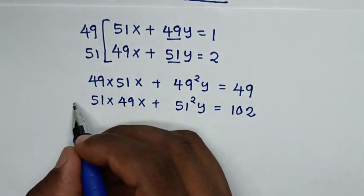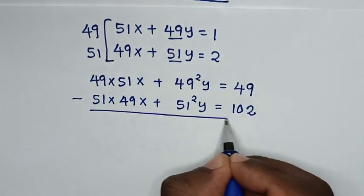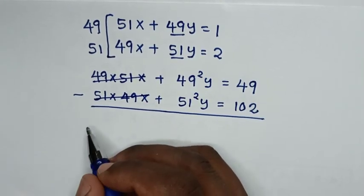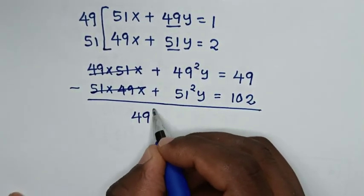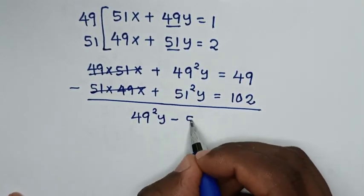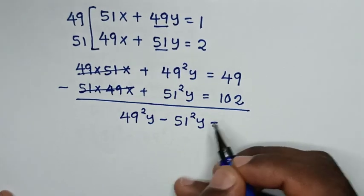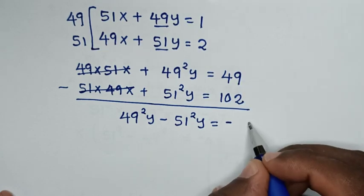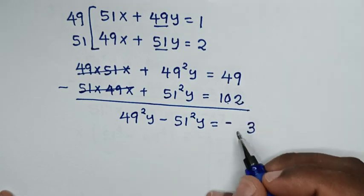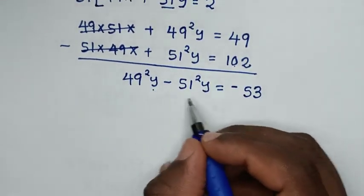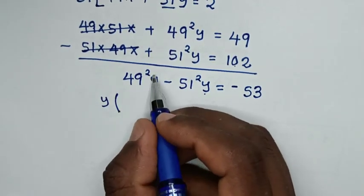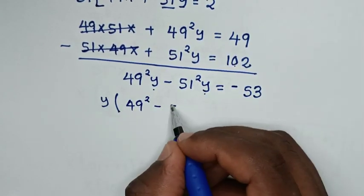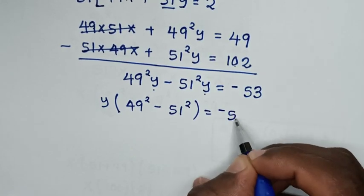Then, in the next step, we take the first equation minus the second equation. The x terms cancel each other. Then we have 49 squared y minus 51 squared y equals negative 53. In the next step, y is common, so we take y out of the bracket: y times (49 squared minus 51 squared) is equal to negative 53.